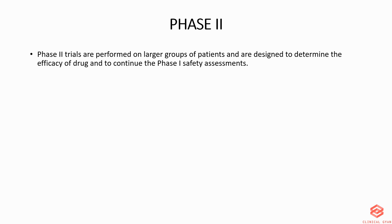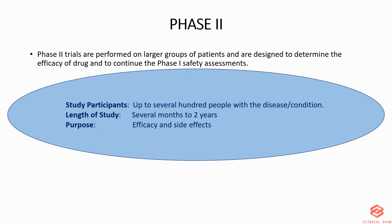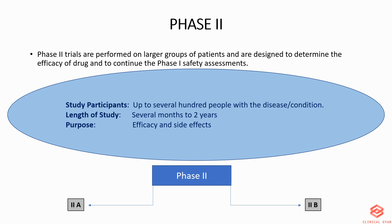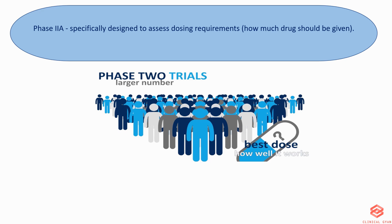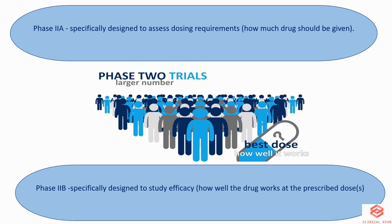Phase 2 trials are performed on larger groups of patients and are designed to determine the efficacy of the drug and to continue phase 1 safety assessments. Study participants are up to several hundred people with the disease or condition. The length of the study is up to several months to two years, and the purpose is to determine efficacy and side effects. Phase 2 is divided into phase 2a, which is specifically designed to assess dosing requirements, and phase 2b, which is specifically designed to study efficacy — how well the drug works at the prescribed dose.